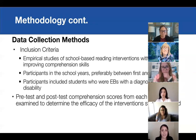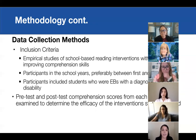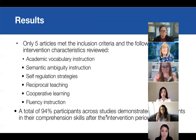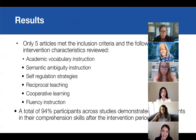The inclusion criteria consisted of empirical studies focused on school-based reading interventions with a focus on improving comprehension skills specifically. Participants in the school years, preferably between first and eighth grade, had to be students who were emergent bilinguals and also had a diagnosed learning disability. Pre-test and post-test comprehension scores from each study were examined to determine the efficacy of the intervention strategies used. From about 2,000 articles, only five articles fit the inclusion criteria.